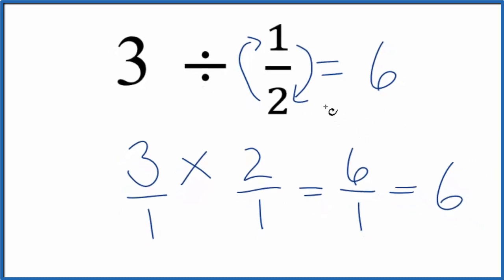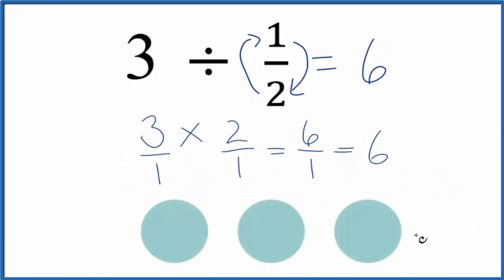You can also think of it this way. If we have three objects, we divided them all in half here. We'd end up with one, two, three, four, five, six. Six halves.